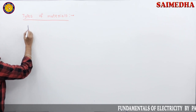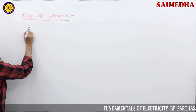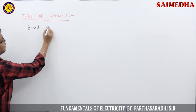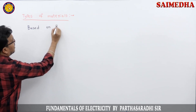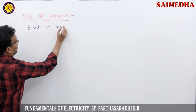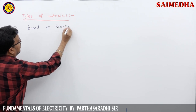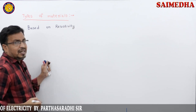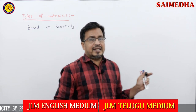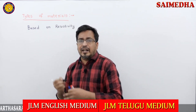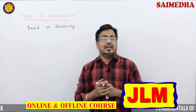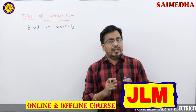Based on resistivity, materials are classified into three types. The three types are: conductors, alloys, and insulators.